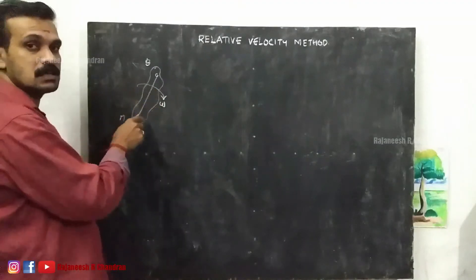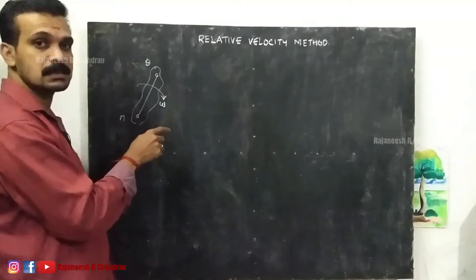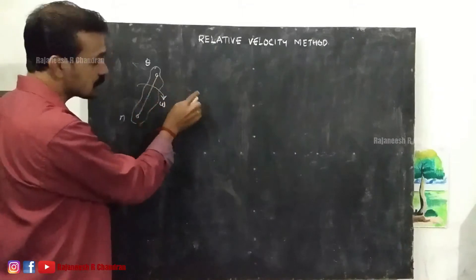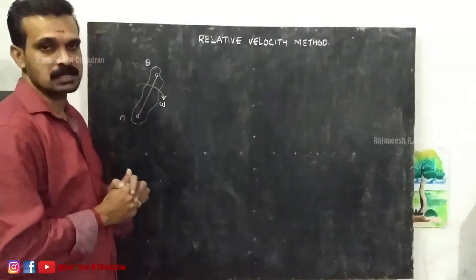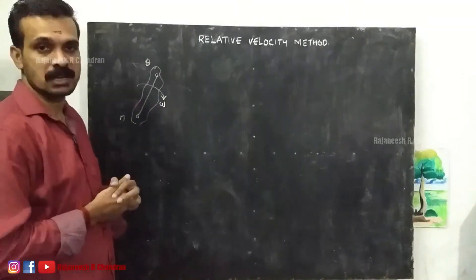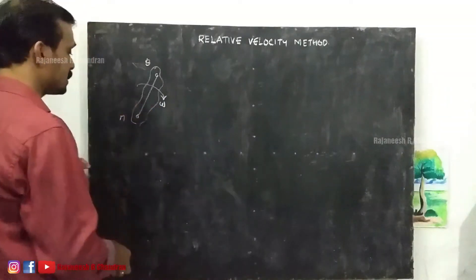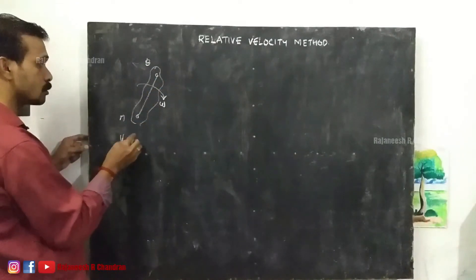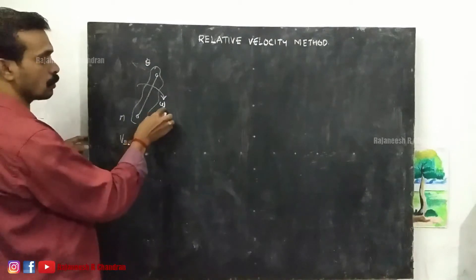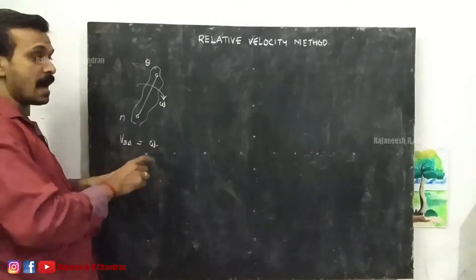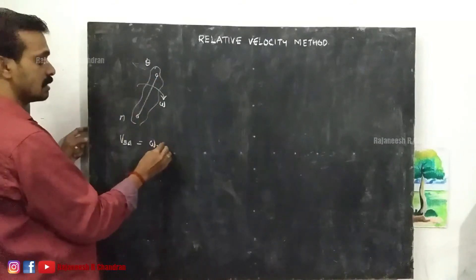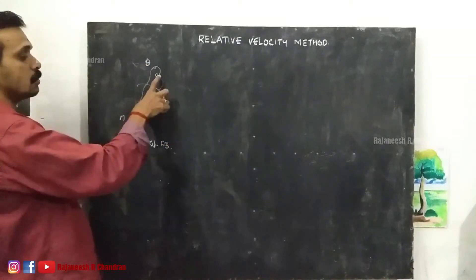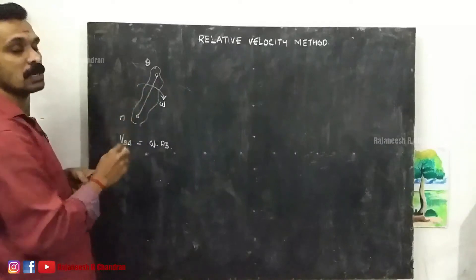Since omega is rotating like this, the velocity will be perpendicular in this direction — so we have obtained the direction. What will be its magnitude? The magnitude of velocity of B with respect to A will be equal to the product of the angular velocity omega and the distance between B and A — that is, distance A-B. So velocity of B with respect to A equals omega into A-B, and the direction will be perpendicular to the line connecting A and B.